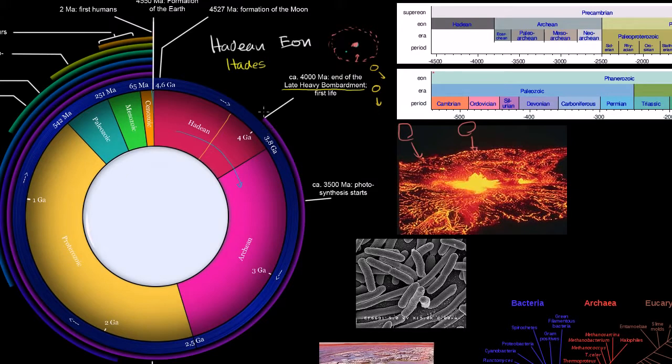And we believe that the first life formed 3.8 to 4 billion years ago. Remember, G for giga, 4 billion years ago. And when we talk about life at this period, we're not talking about squirrels or panda bears. We're talking about extremely simple life forms. We're talking about prokaryotes.